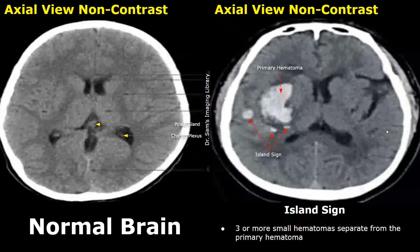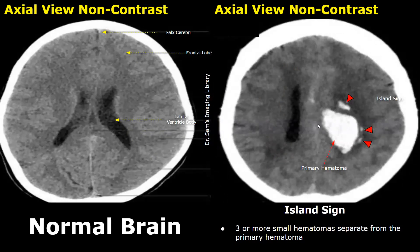The island sign is the term given to three or more small hematomas separate from the main hematoma. This larger hematoma is the main primary hematoma, and we see three smaller hematomas nearby — this type of appearance is the island sign. Here is another image showing the island sign: three small hematomas are seen next to a large primary hematoma.